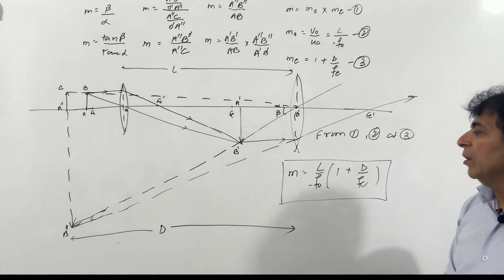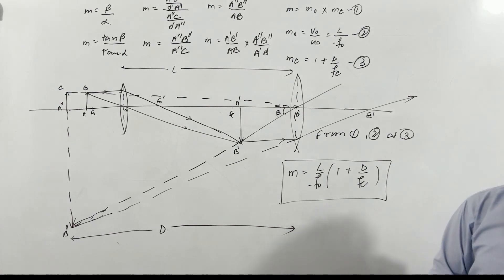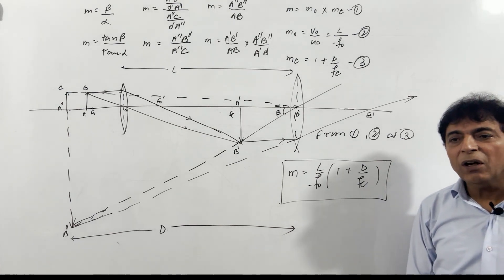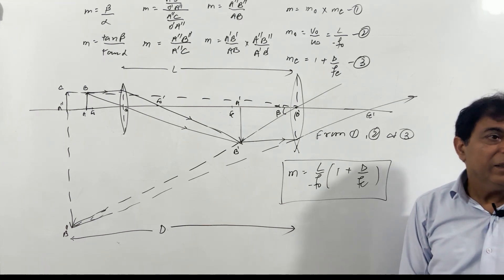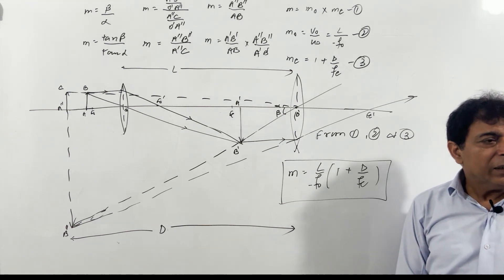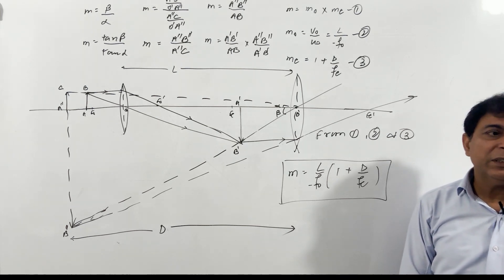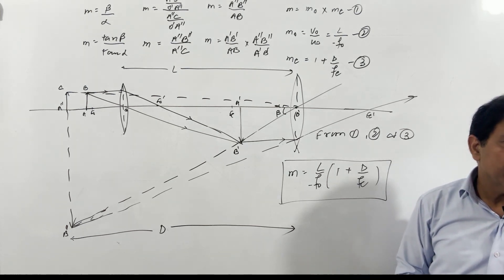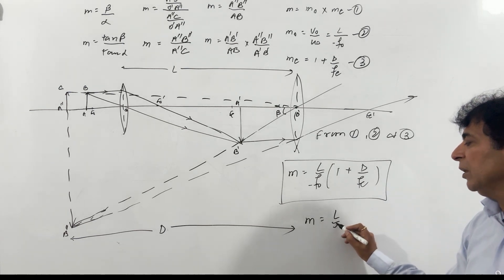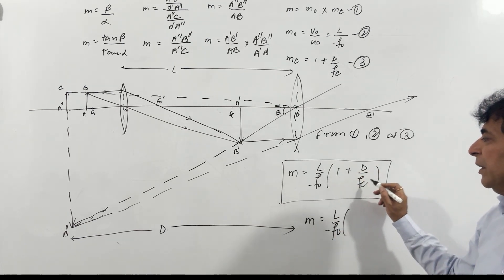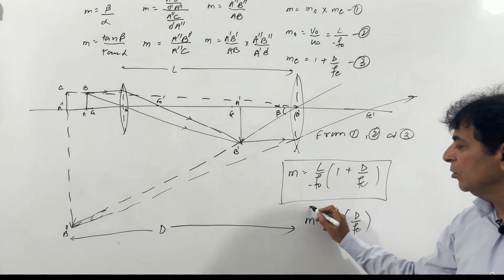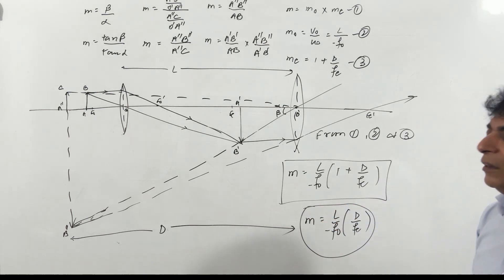The formula for magnifying power of a compound microscope is M = (L/fo)(1 + D/fe), when the image is at the least distance of distinct vision. When the image is at infinity, the formula modifies: the term (1 + D/fe) is replaced by D/fe. Both formulas need to be noted as they are required in problems.